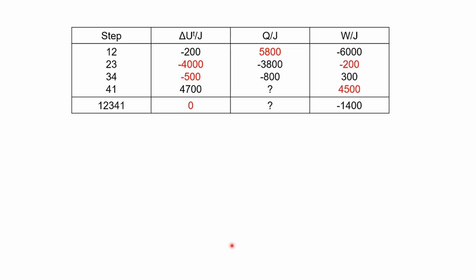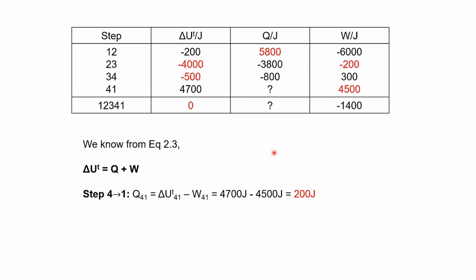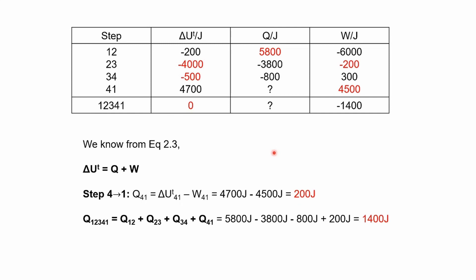With almost every unknown variable found, we can now determine Q for step 4 to 1 using equation 2.3: ΔU = Q + W. Plugging in the numbers gives us Q for step 4 to 1. Finally, since Q is not a state function, Q for the whole process is the summation of Q for individual steps, giving us 1400 joules. You can also apply equation 2.3 for the entire cycle 1→2→3→4→1 to get the same answer.